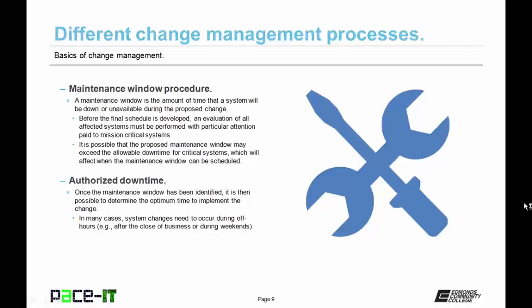When planning out a change to an IT system, it's important to involve a maintenance window procedure. A maintenance window is the amount of time that a system will be down or unavailable during the proposed change. Before the final schedule is developed, an evaluation of all affected systems must be performed with particular attention paid to mission-critical systems. It is possible that the proposed maintenance window may exceed the allowable downtime for critical systems, which will affect when the maintenance window can be scheduled.